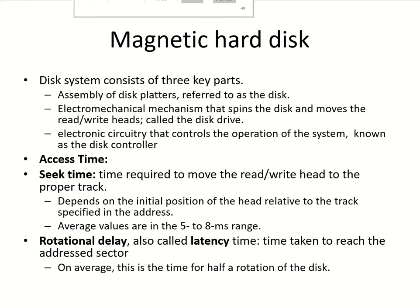This whole disk system consists of three major parts. One is the assembly of the disk platters and the spindle which rotates it — this is referred to as the disk. Then there is the electromechanical mechanism which spins the disk and moves the read-write heads — this is called the disk drive. And the electronic circuitry which controls the operations of the system is known as the disk controller.